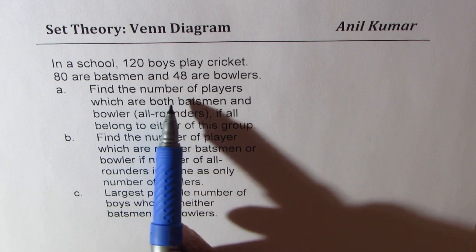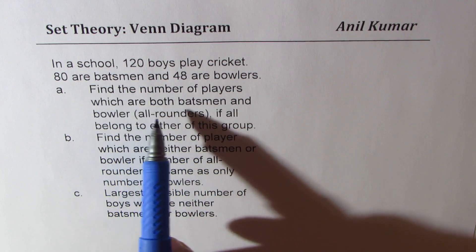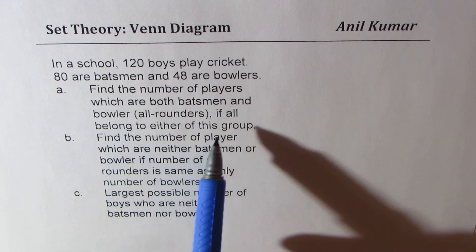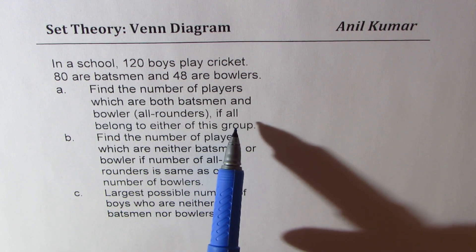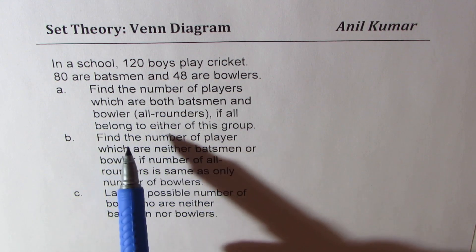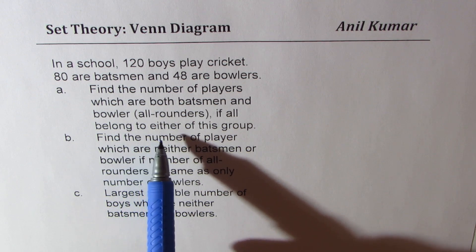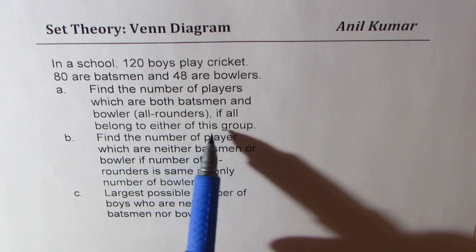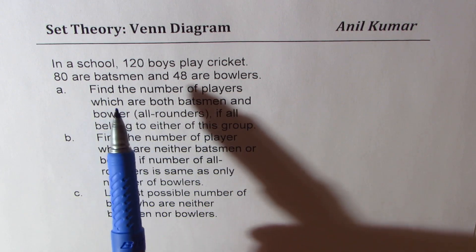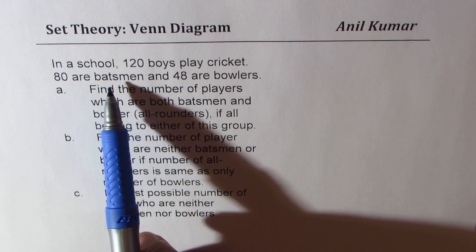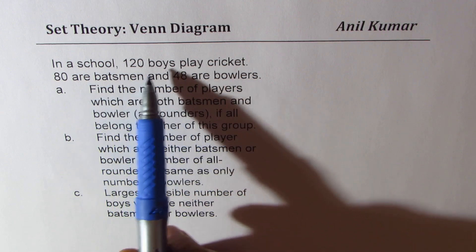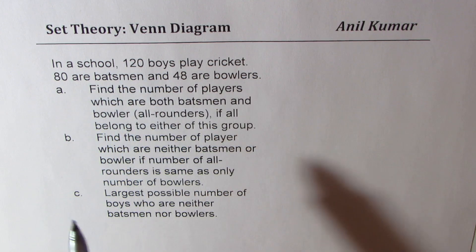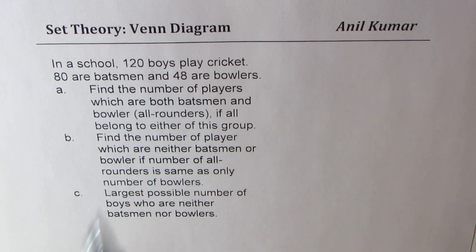Find the number of players which are both batsmen and ballers if all belong to either of this group. So either of this group means all are players — either they are batsmen or ballers. That's Part A.